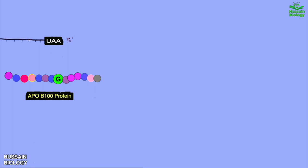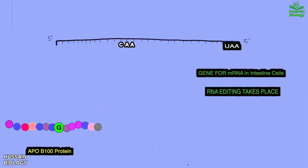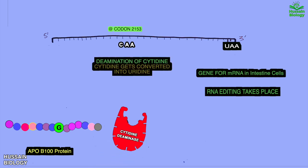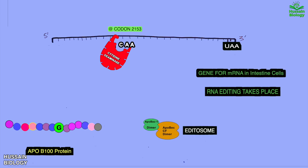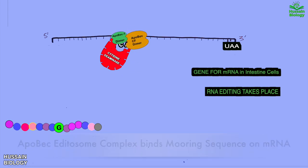Now if the gene for this mRNA is present in the intestine cells, that time RNA editing takes place. Here the deamination occurs at 2153 position by cytidine deaminase enzyme. For this deamination to occur we need some other proteins also like apoBEC protein, apoBEC CF protein and many other proteins. These proteins assemble at editing site and are referred as editosome.